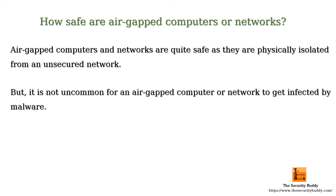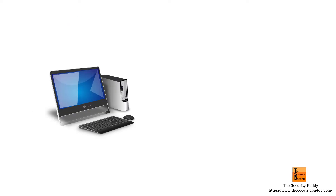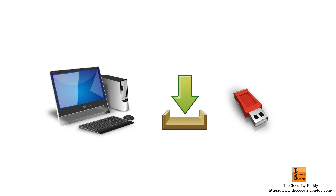But it is not uncommon for an air gap computer or network to get infected by malware. For example, we need to update the software of an air gap computer. As it is physically isolated from other networks, it is not possible to automatically update the software. We need to download and install the update manually using USB drives. So if the USB drive is already infected by malware, the air gap computer will get infected.